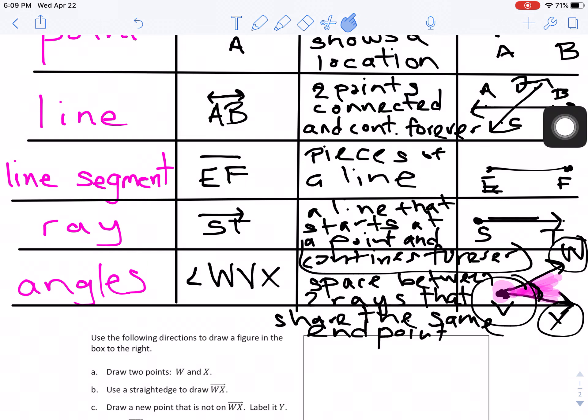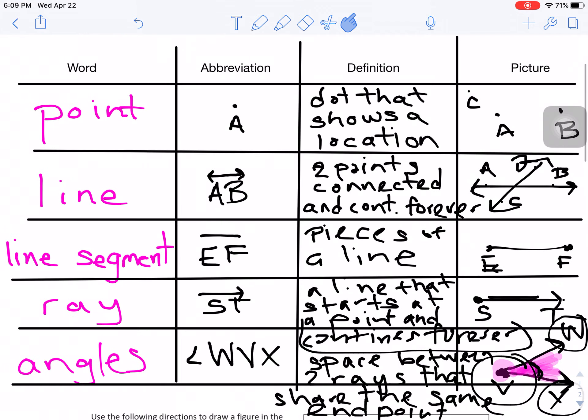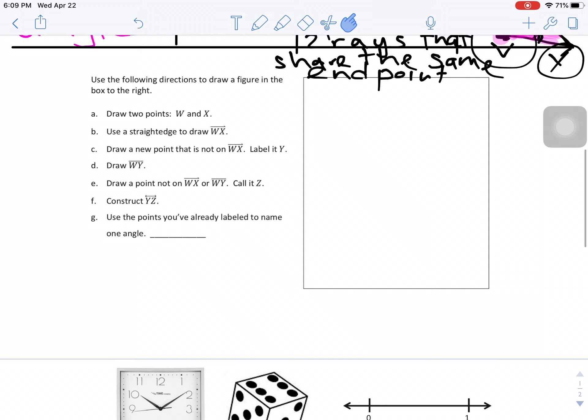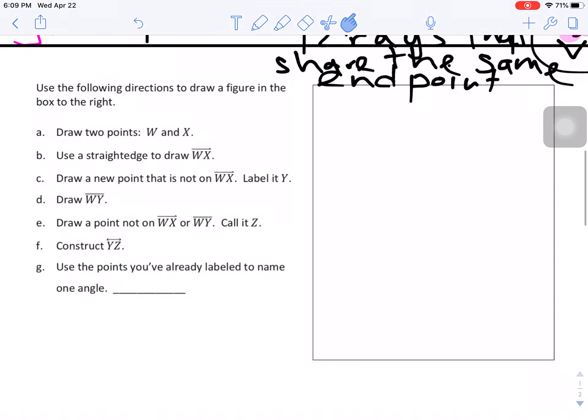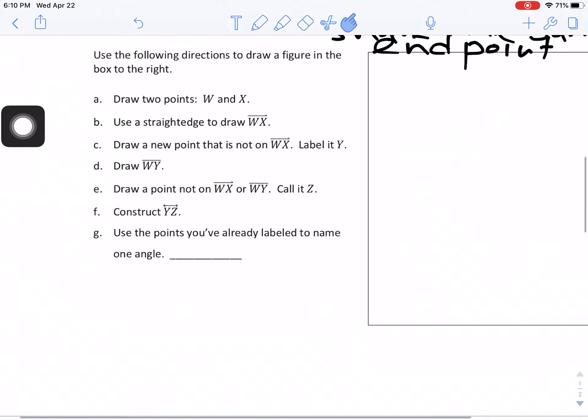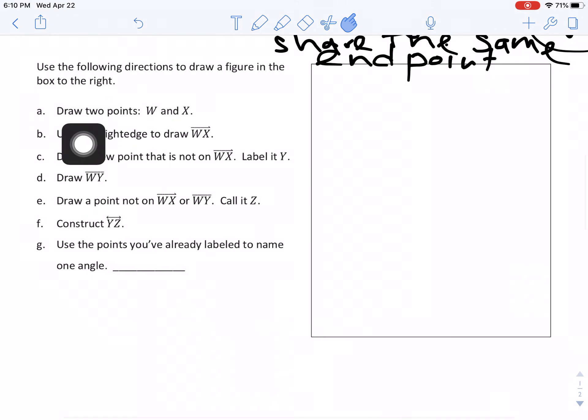So we're going to use this information to solve some problems in your problem set. I have the homework problems. If you accidentally got a homework book, that's okay. It looks just like the problem set. It says, use the following directions to draw a figure in the box to the right. So remember, a figure is a shape or something on a flat surface that uses all these vocabulary words to create them. So you're going to go in order of the directions.